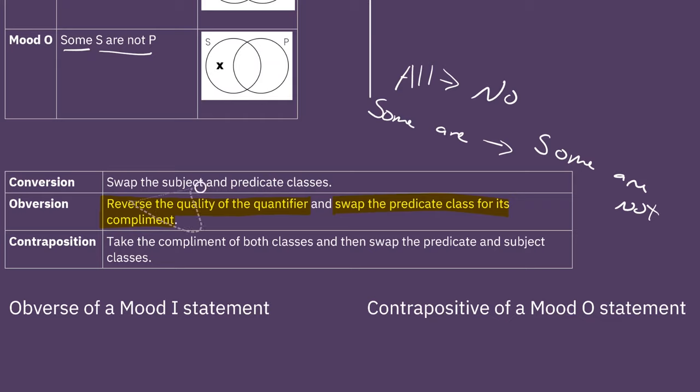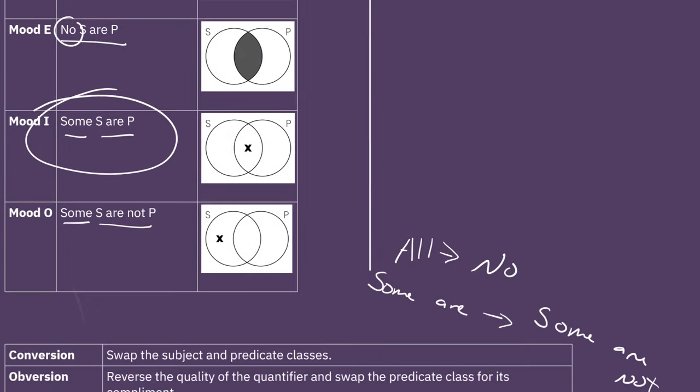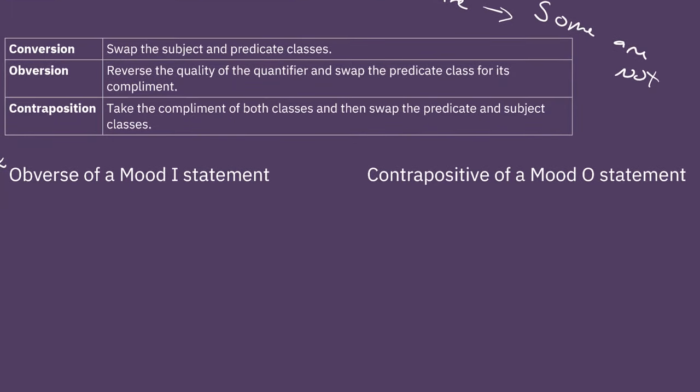So those are the two steps. And if we're going to do an example of this, this is one of the items from your quiz. Let's do this first one. Let's take the obverse of a mood I statement. So what's a mood I statement? Some S are P. So let's go down here and fill this in. Some S are P.